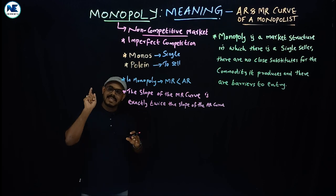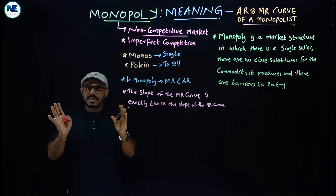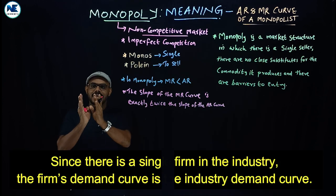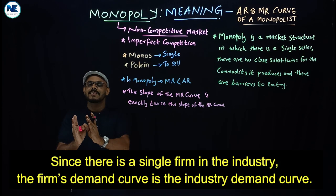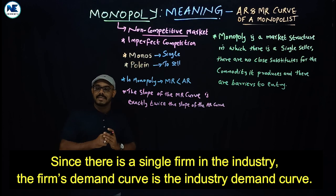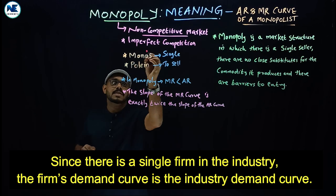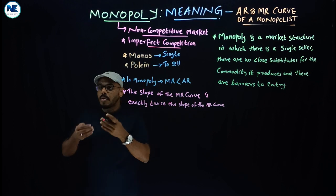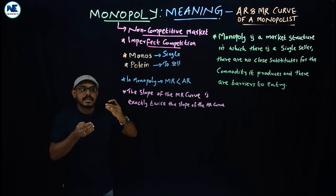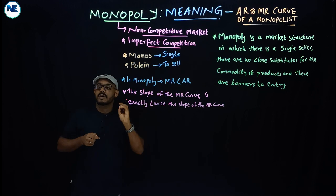Why is there a single seller or a single producer? Here, the firm is equal to the industry. The firm's demand covers what industry demand or market demand covers. As you know, imperfect competition means all those market structures other than perfect competition.